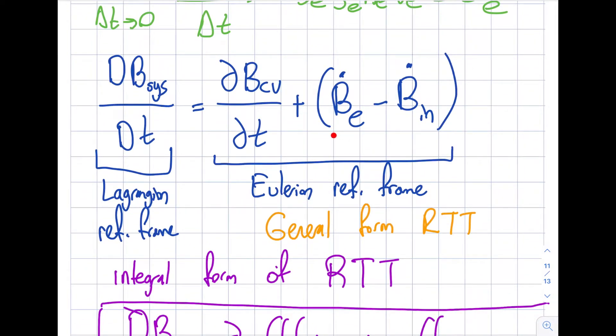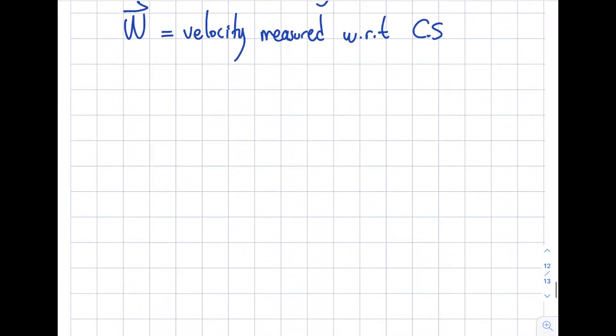This actually, the last term that I have in the general form of the RTT is two terms: exit minus inlet. And I derived this for a nozzle, right? It was a stationary nozzle, it was non-deforming except the area was getting smaller. And I said let's pick the control volume like this in this particular case.